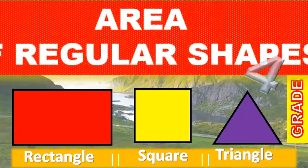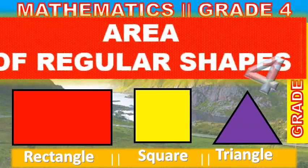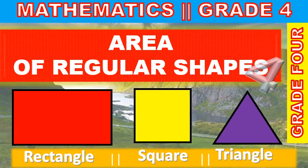For example, a square table measures 5 meters. What is its area? I will take 5 meters and multiply it by 5 meters to get 25 meters squared. Therefore, the area of the square table is 25 meters squared.